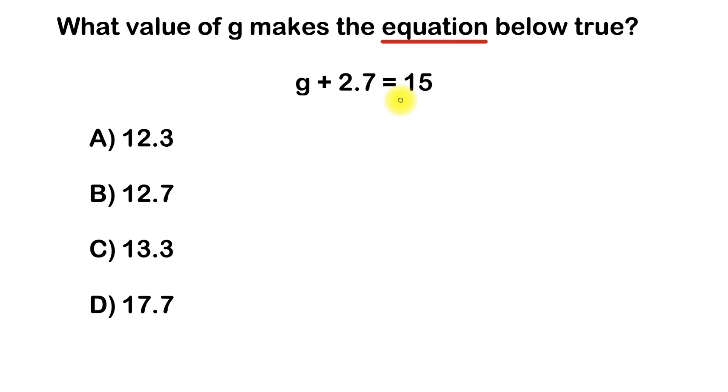Now, the reason it looks a little bit tricky is because it has this thing here called a variable. And a variable is just a letter that is holding the place for a number.